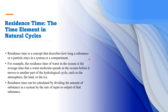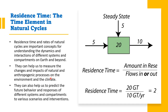Different elements like nitrogen and water have different kinds of residence time. Residence time is basically calculated by dividing the amount of substance in a system by the rate of input or output of that substance. In this system or reservoir, for example, the input is 5 and the output is 10 — input and output are treated as equal for steady-state calculations.